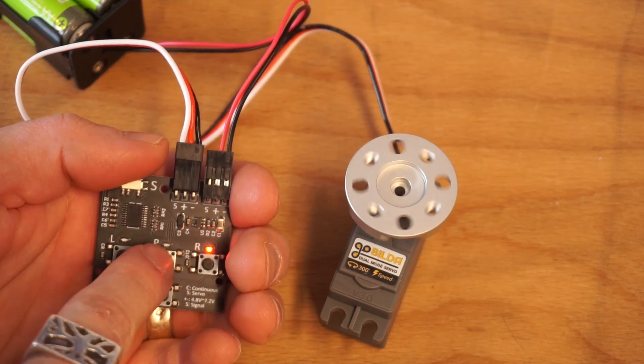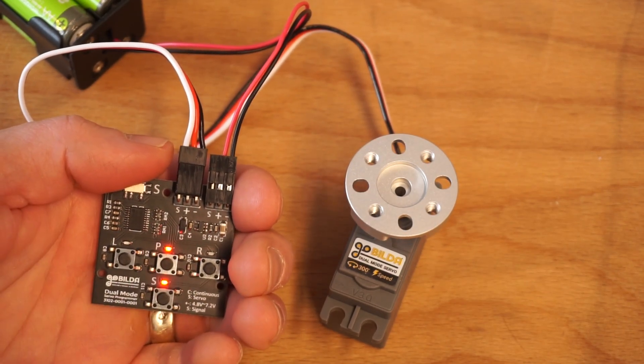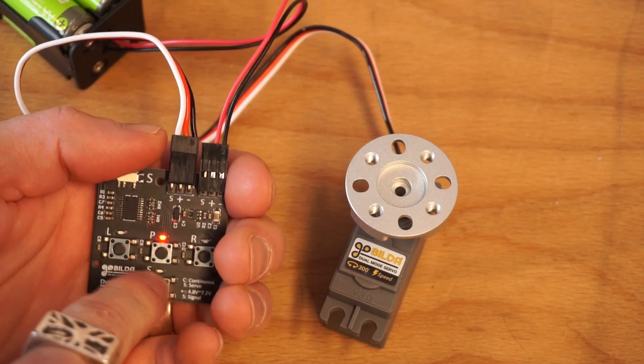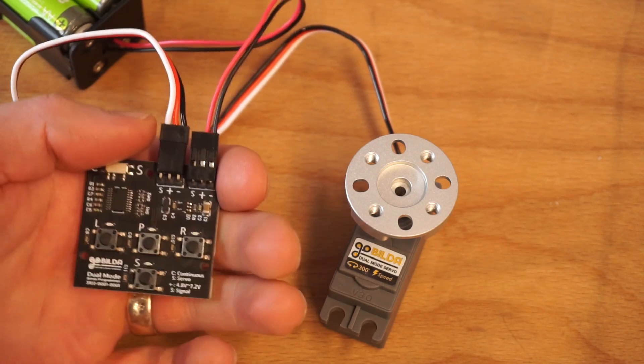Right, maximum rotation right, and middle should stop the servo. Press S one more time and it will turn off the testing function.